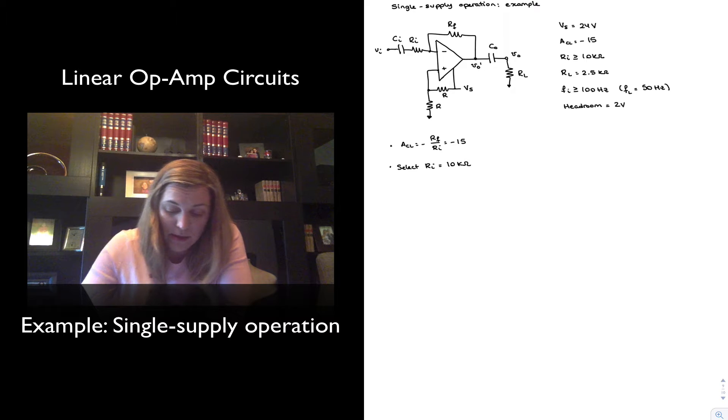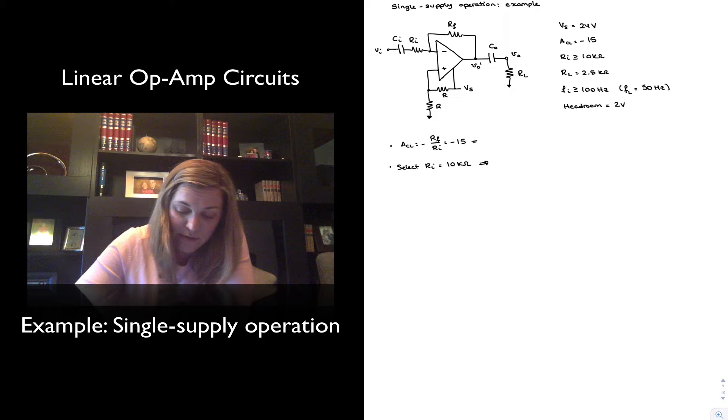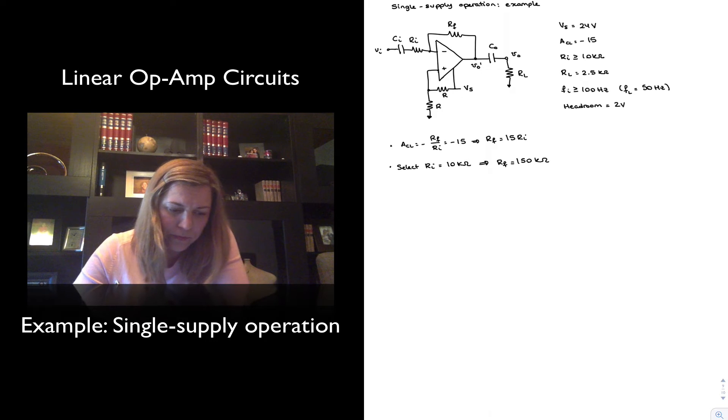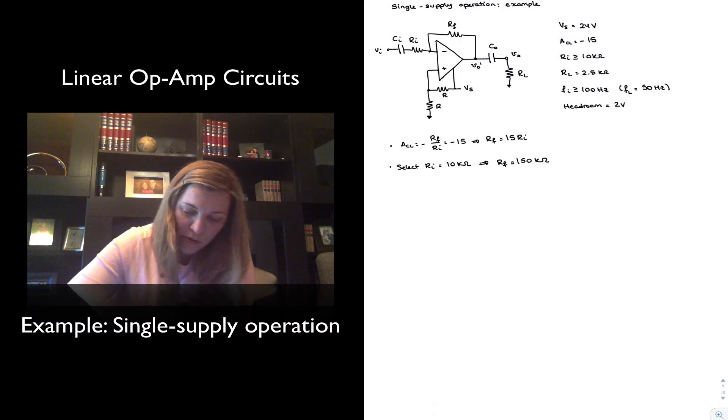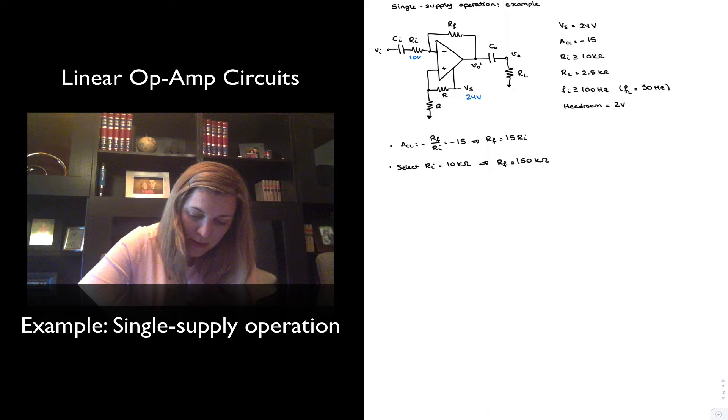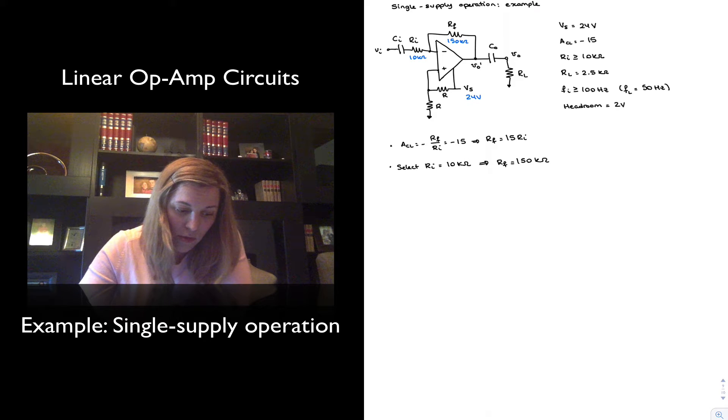In that case, then we will have that RF, from here, we can see that RF must be 15 times RI. And therefore, if we selected RI to be 10, this is going to be 150 kΩ. I'm going to go ahead and enter those values here. So my VS is 24 volts, and I've just determined RI is 10 kΩ, RF is 150 kΩ. So far, so good.